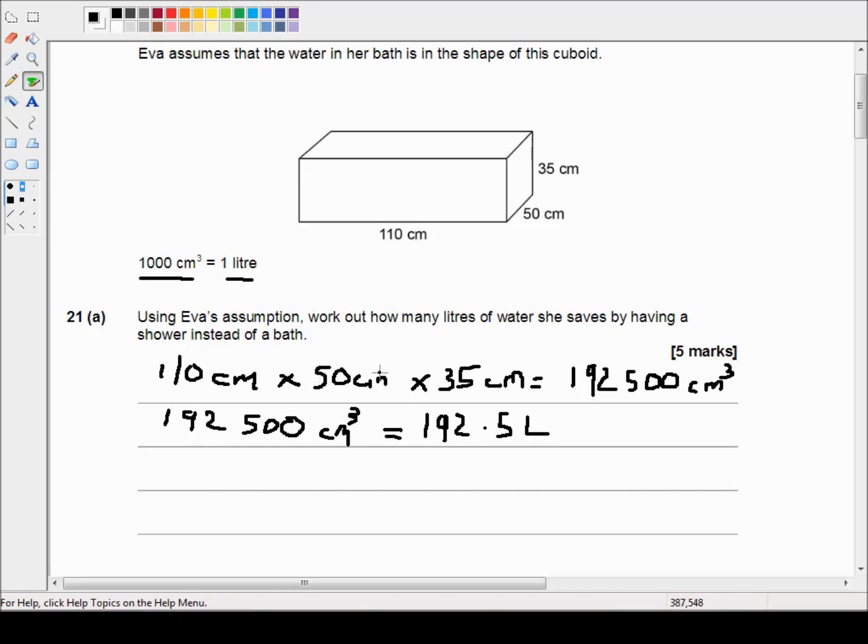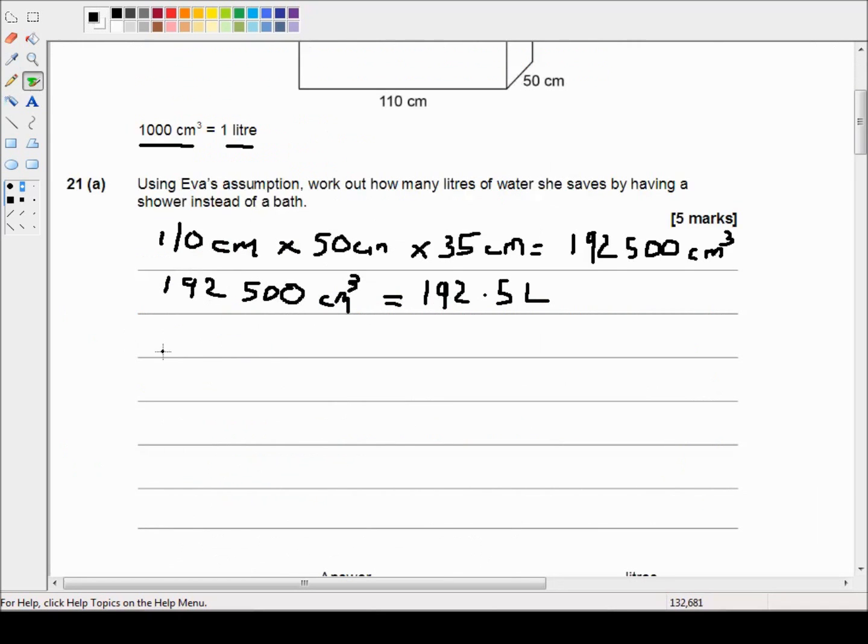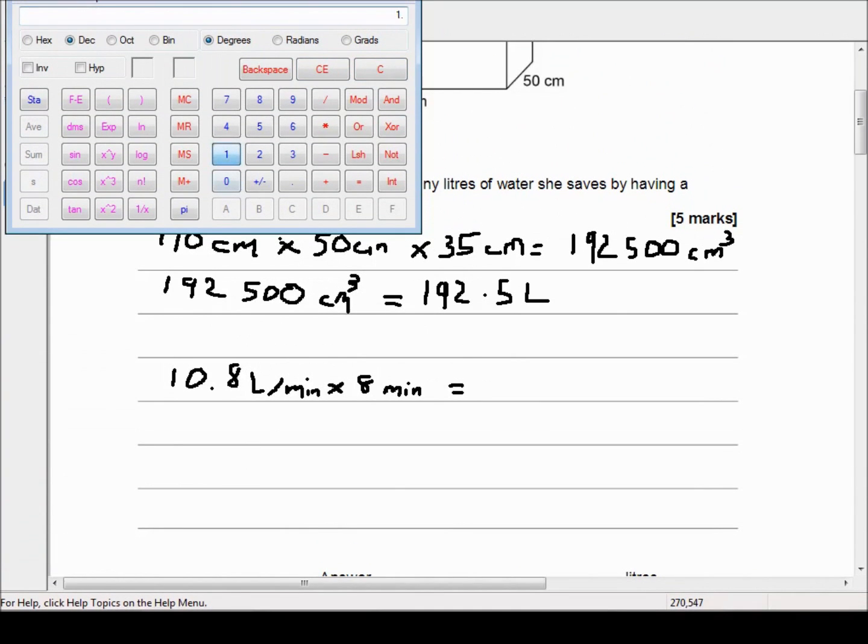Now we need to know how much water Eva used for her shower. That's 10.8 liters per minute times 8 minutes, or 10.8 liters every minute for 8 minutes. That's equal to—I'm going to use my calculator—10.8 times 8, which equals 86.4 liters.